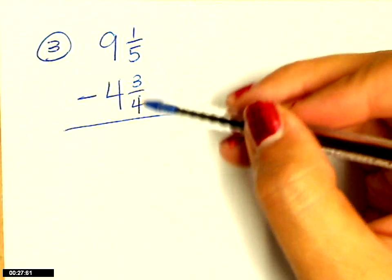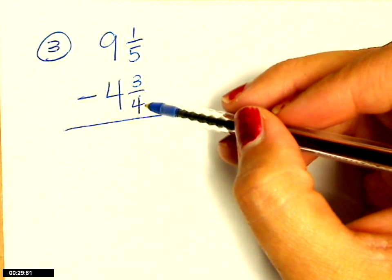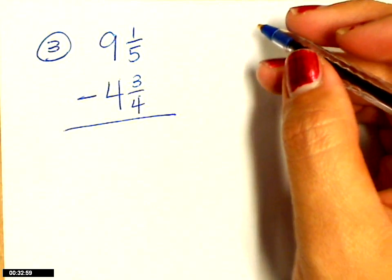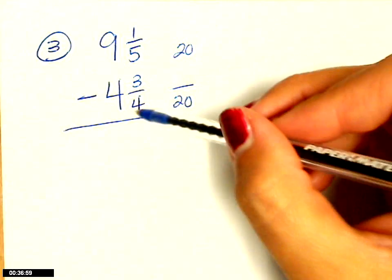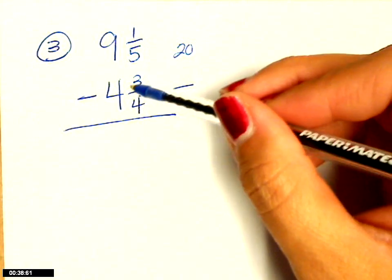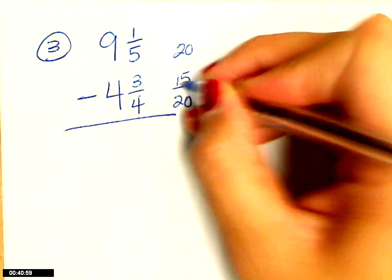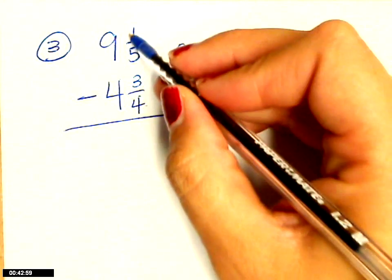You need a common denominator. Common denominator is going to be 20. So you ask yourself, four times what gives me 20? That's five. So three times five, that's 15. Five times four gives me 20, so one times four is four.